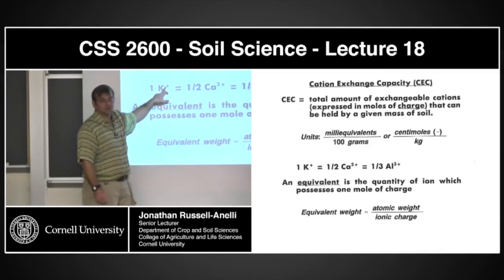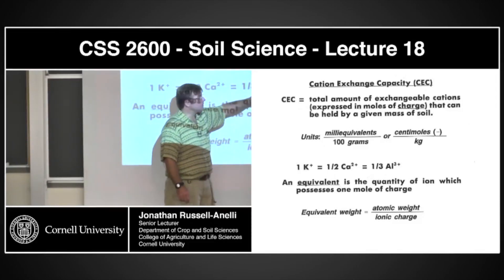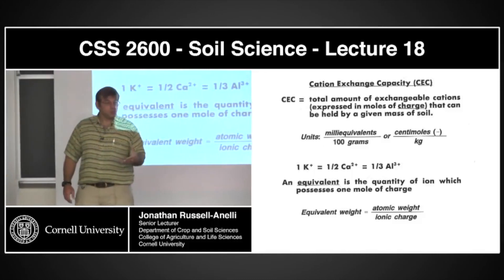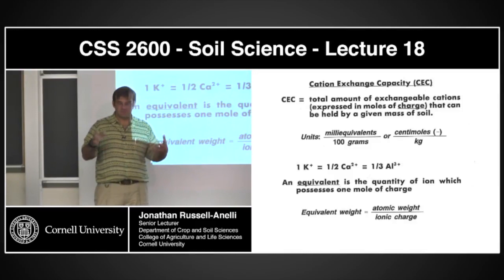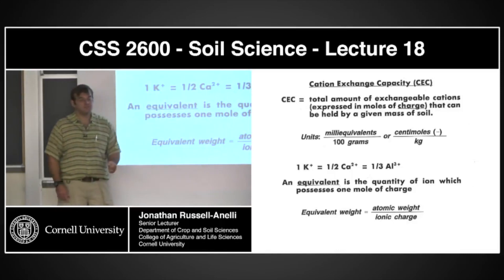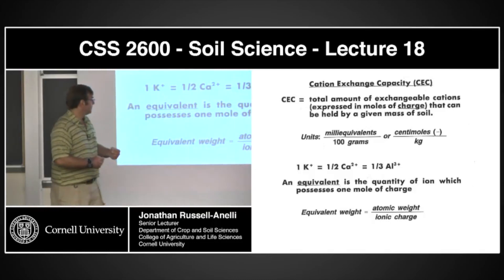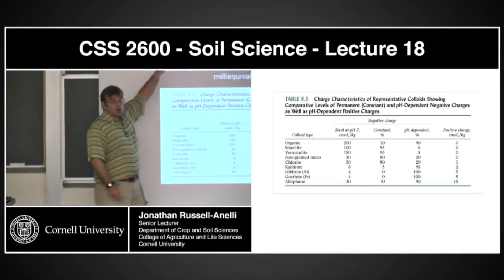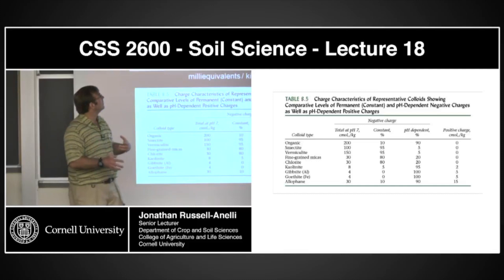Potassium has one charge; calcium has two charges. So potassium is equivalent to one-half of a calcium charge. It's also equivalent to one-third of an aluminum charge, because aluminum has plus-three. We're literally talking about charges here — how many positive charges you can hold on to. So if I had a colloid that had a plus-three charge, it could hold on to one aluminum, or three potassium, or one calcium and one potassium. It couldn't hold two aluminums because it doesn't have the charge capacity. This charge is largely dependent on the clay and organic matter content of that soil.